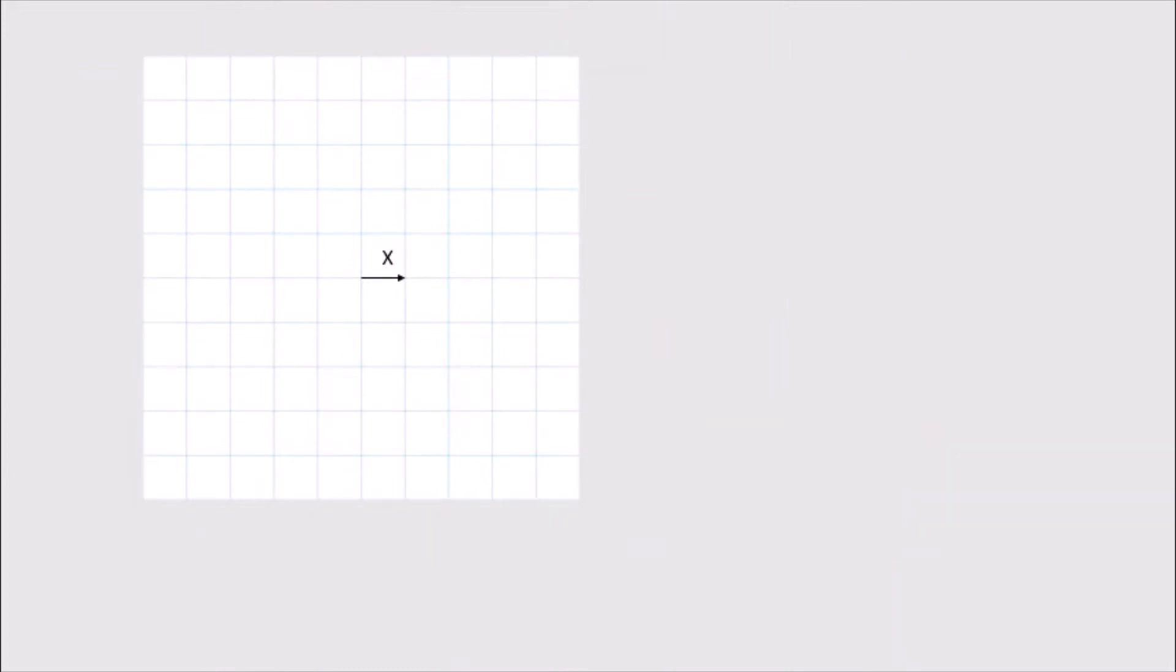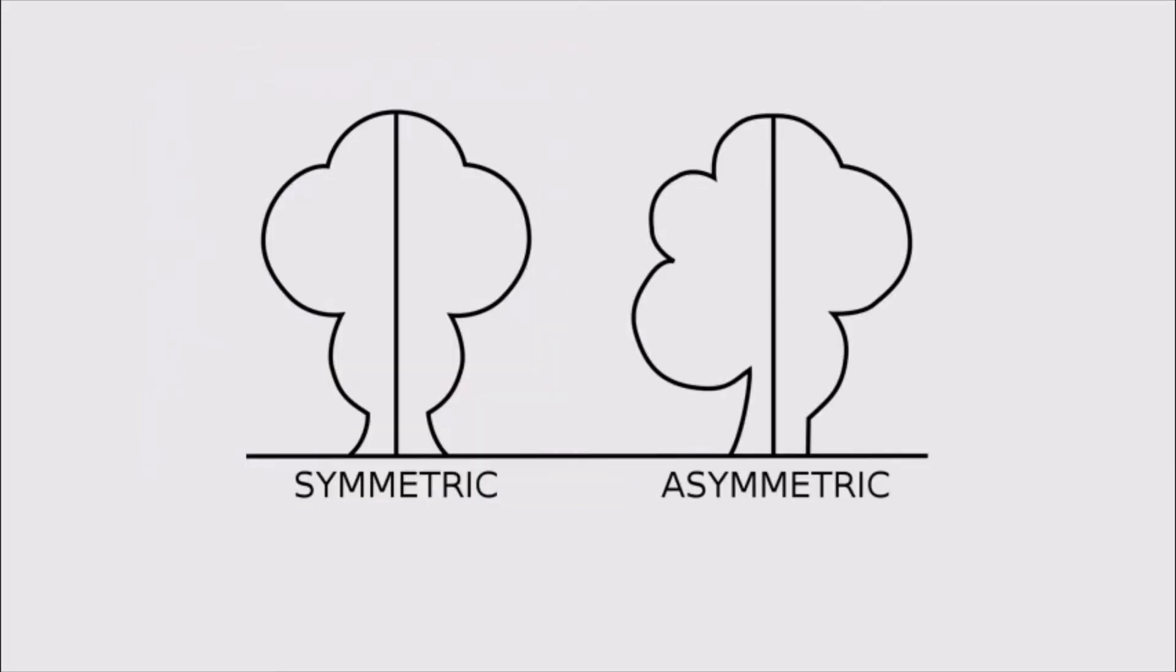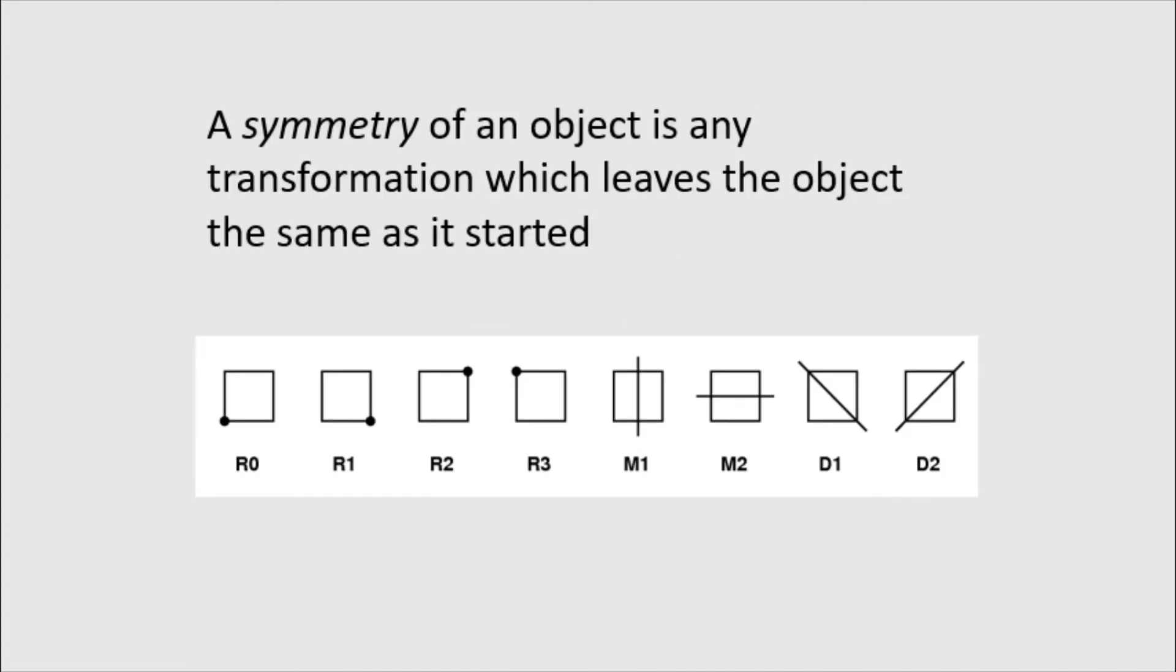Because of this, we see that a translation of the grid one unit to the right is a symmetry of the grid. Now you might be used to thinking of symmetry in terms of reflections. But more generally speaking, a symmetry of an object is any transformation, so any reflection, rotation, translation, or combination of those, which leaves the object the same as it started.